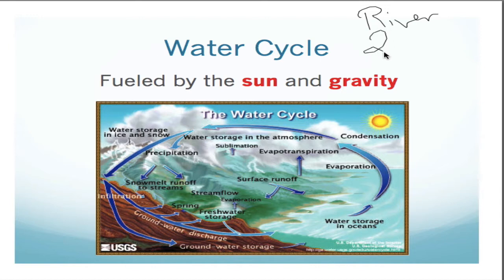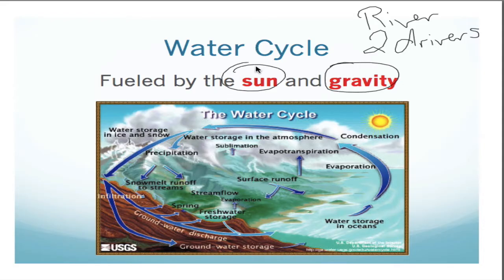There are two drivers in the water cycle, and that's going to be gravity and the sun. The sun is going to do a couple different things in terms of moving water from place to place, and gravity — you might not think of it — but gravity plays a really important role in the water cycle as well.